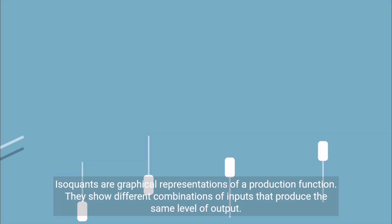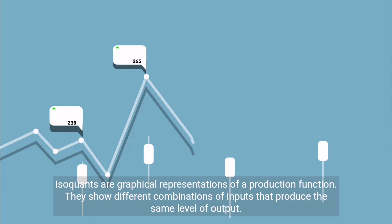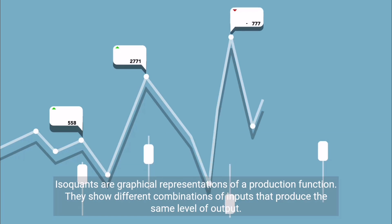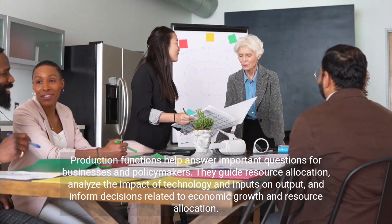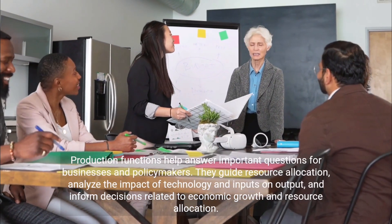Isoquants are graphical representations of a production function. They show different combinations of inputs that produce the same level of output.